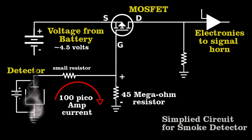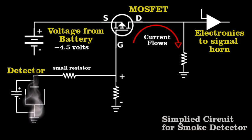If smoke enters the chamber, the tiny current stops. The MOSFET allows current to flow in this section of the circuit, which triggers the horn.